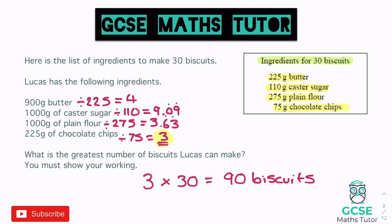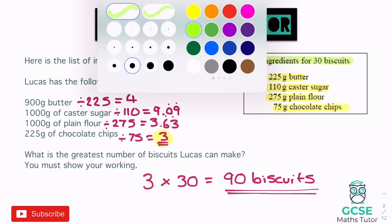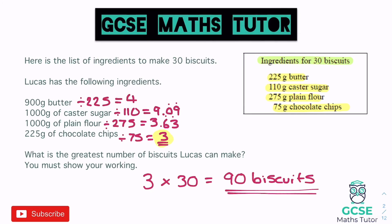That's how you answer one of these — find the limiting number, make it clear in your working, and then refer back to the actual recipe. In this case the recipe was for 30 biscuits, so three lots gives us 90 total.